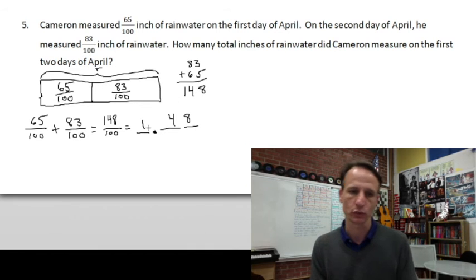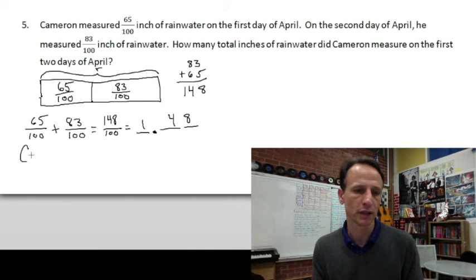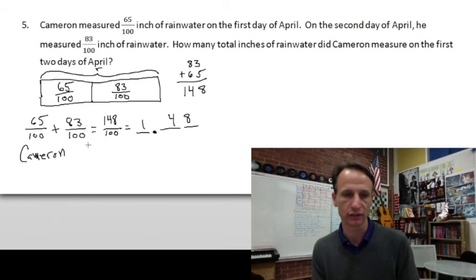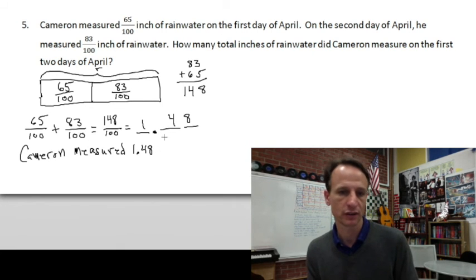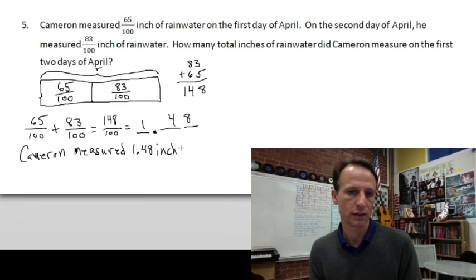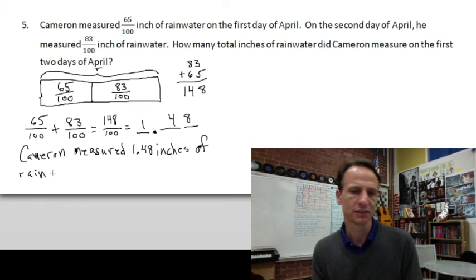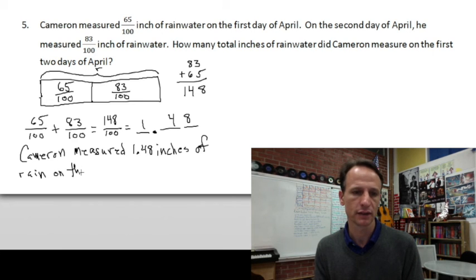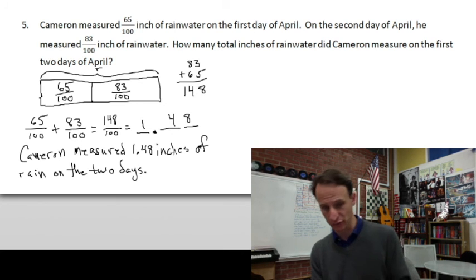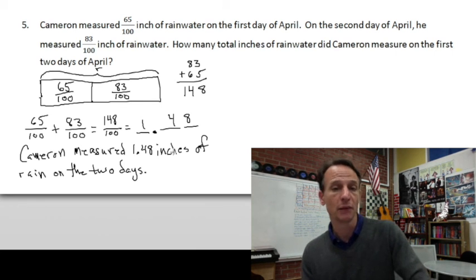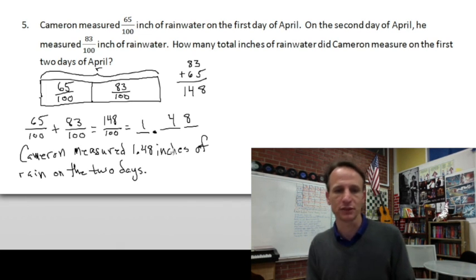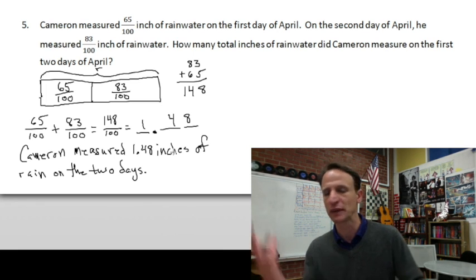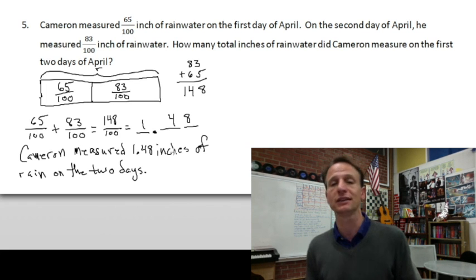Writing out the place values — ones, decimal point, tenths, hundredths — 148 ending in the hundredths place is 1.48. Cameron measured one and forty-eight hundredths inches of rain over the two days. Note that the specific days being April first and second is extraneous information — it doesn't matter. Look what you've gone and done — awesome sauce! You've completed another homework time. See you again next time.